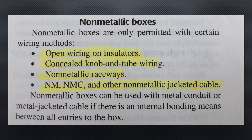Non-metallic boxes: non-metallic boxes are only permitted with certain wiring methods: open wiring on insulators, concealed knob and tube wiring, non-metallic raceway, and NM, NMC, and other non-metallic jacketed cable. Non-metallic boxes can be used with metal conduit or metal jacketed cable if there is an internal bonding means between all entries to the box.